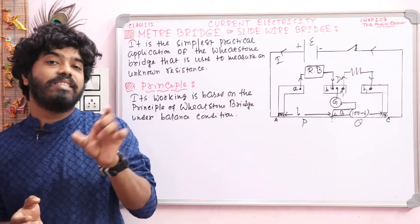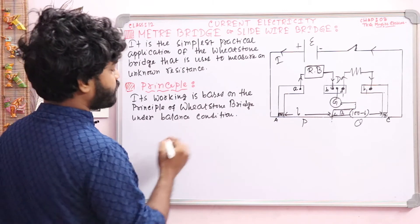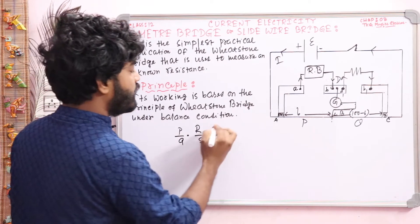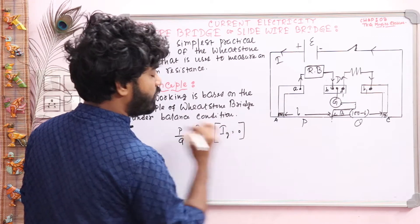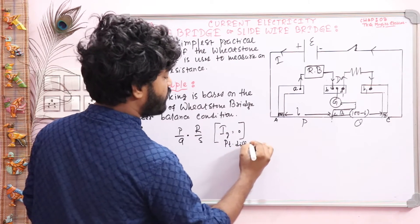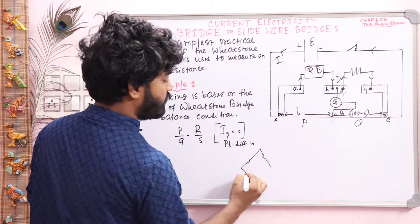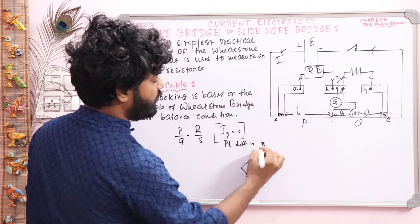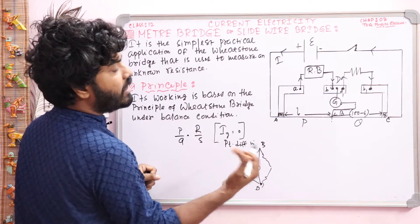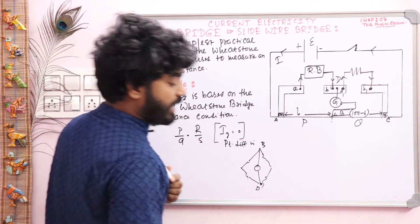In the Wheatstone Bridge, if there are four resistances P, Q, R, S in the circuit, under balance condition we write P/Q = R/S. This balance condition occurs when the current Ig flowing through the galvanometer is zero, meaning the potential difference between the two terminals where the galvanometer is connected is equal. Current doesn't flow when potential difference is equal — current always flows from higher to lower potential. This is the principle on which the meter bridge works.